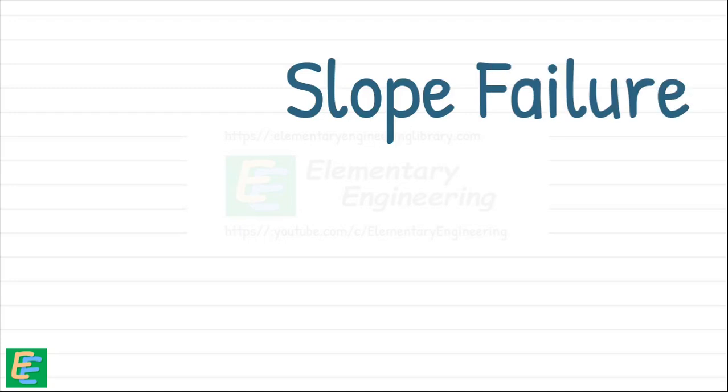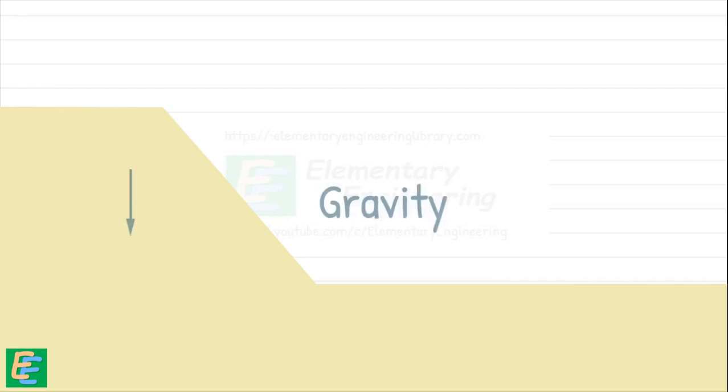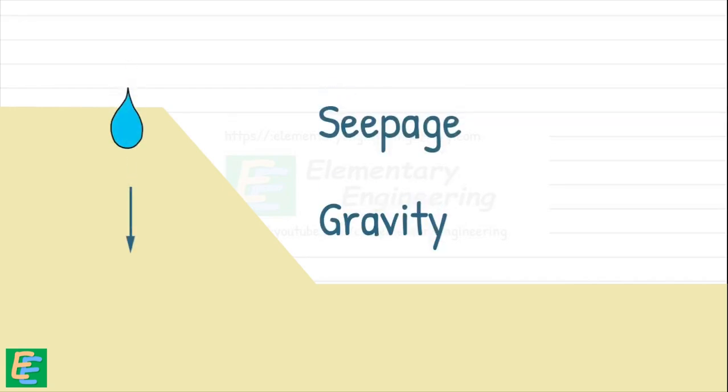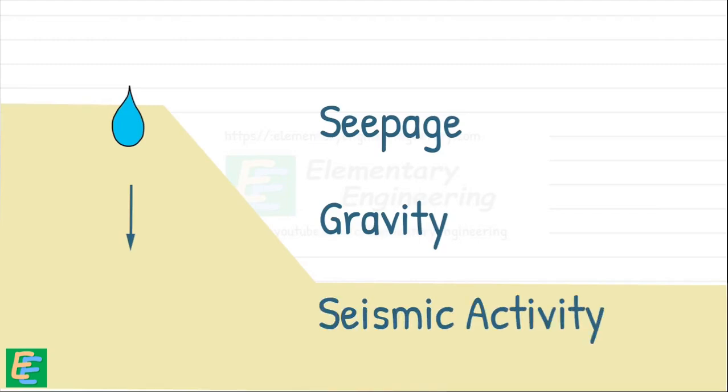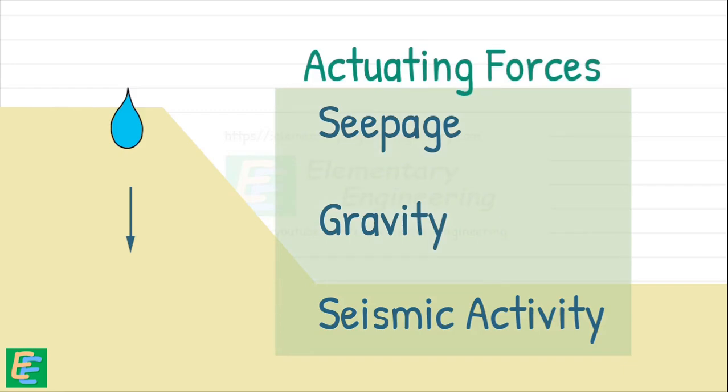The failure of a slope or soil mass occurs when a large mass of soil slides with respect to the remaining mass. The main forces causing this instability are gravity and seepage. In earthquake prone areas, seismic activity can also play a big role. These forces, known as actuating forces, create shearing stresses throughout the soil. It's all about the balance between these forces and the soil's resistance.